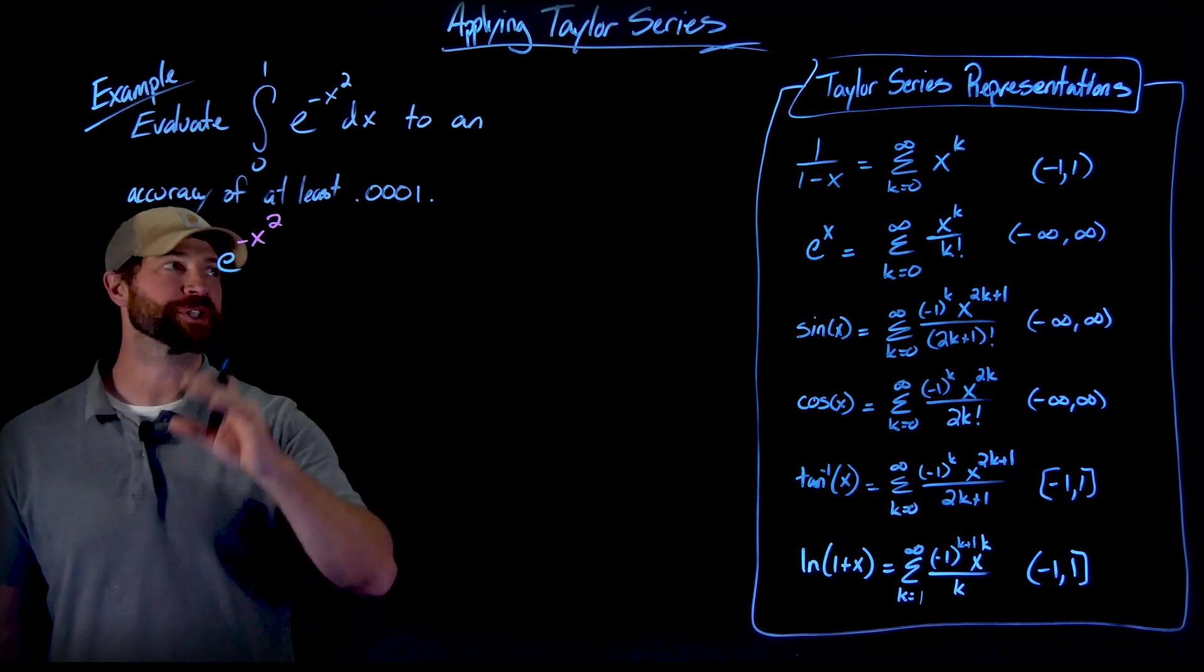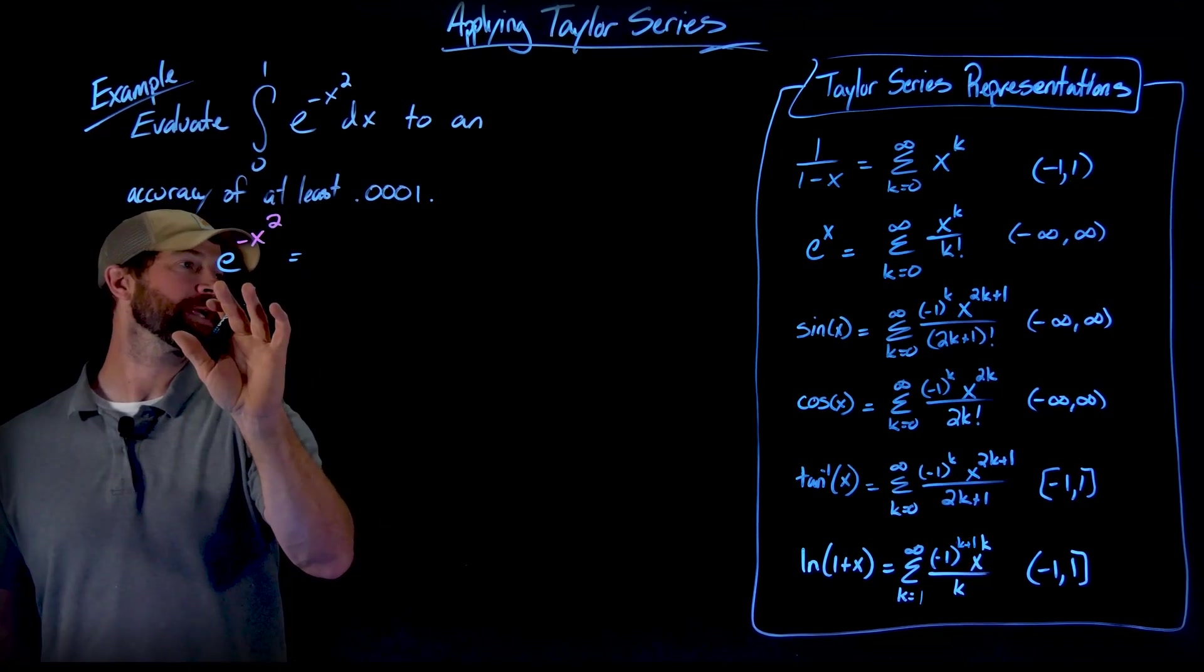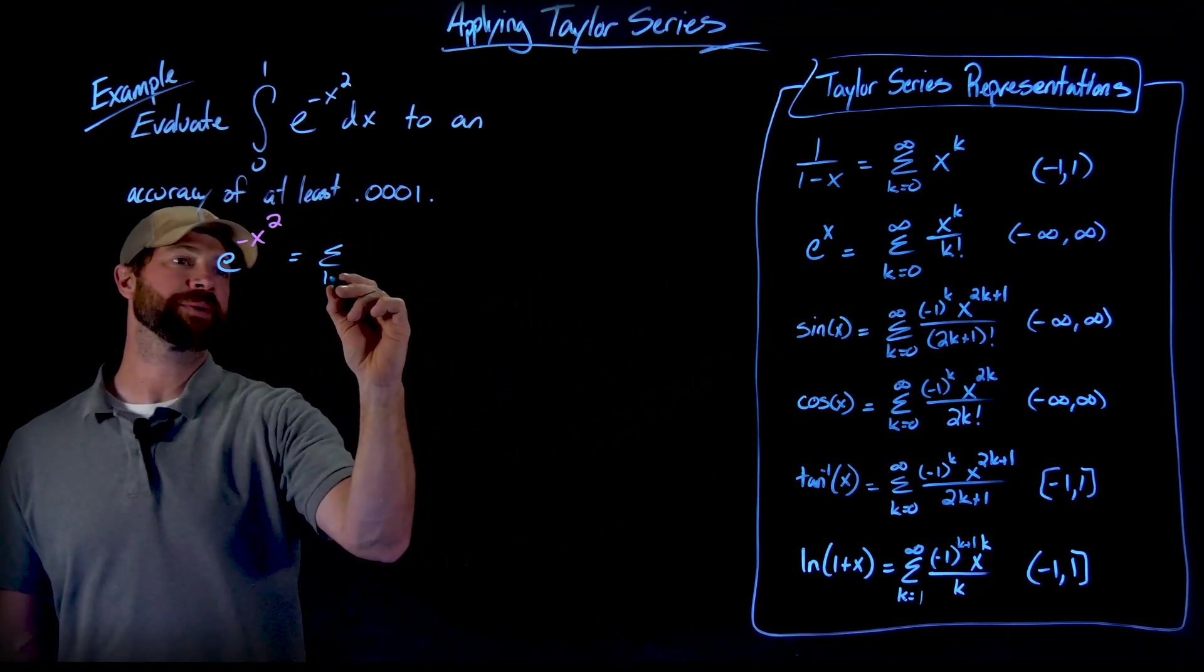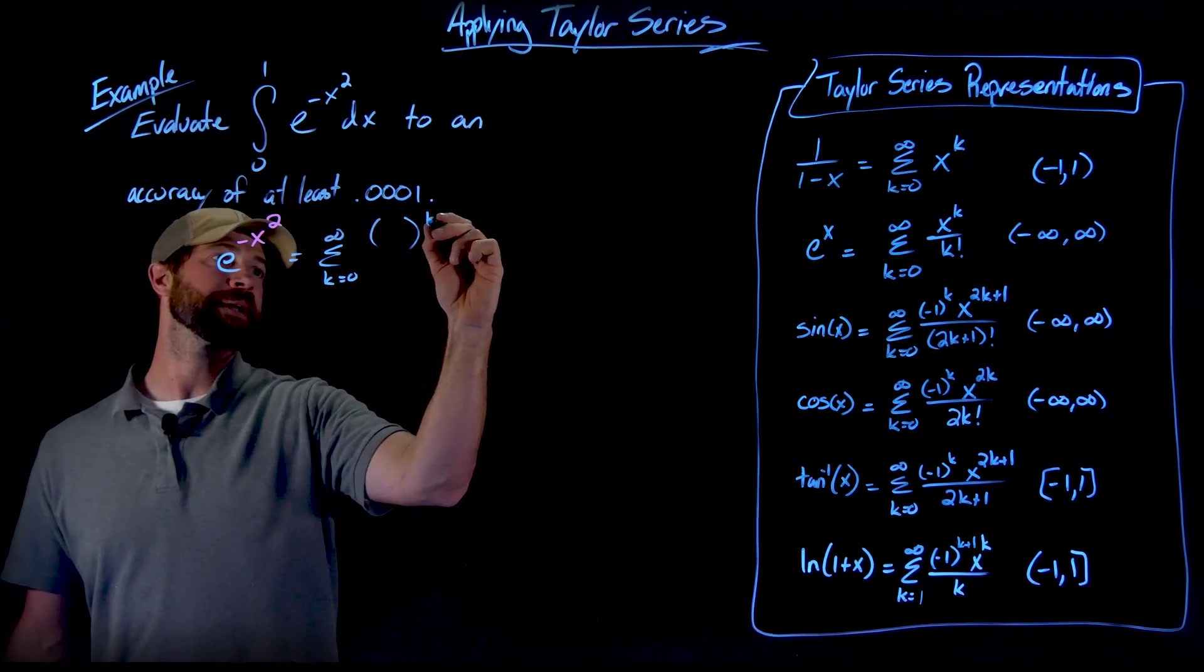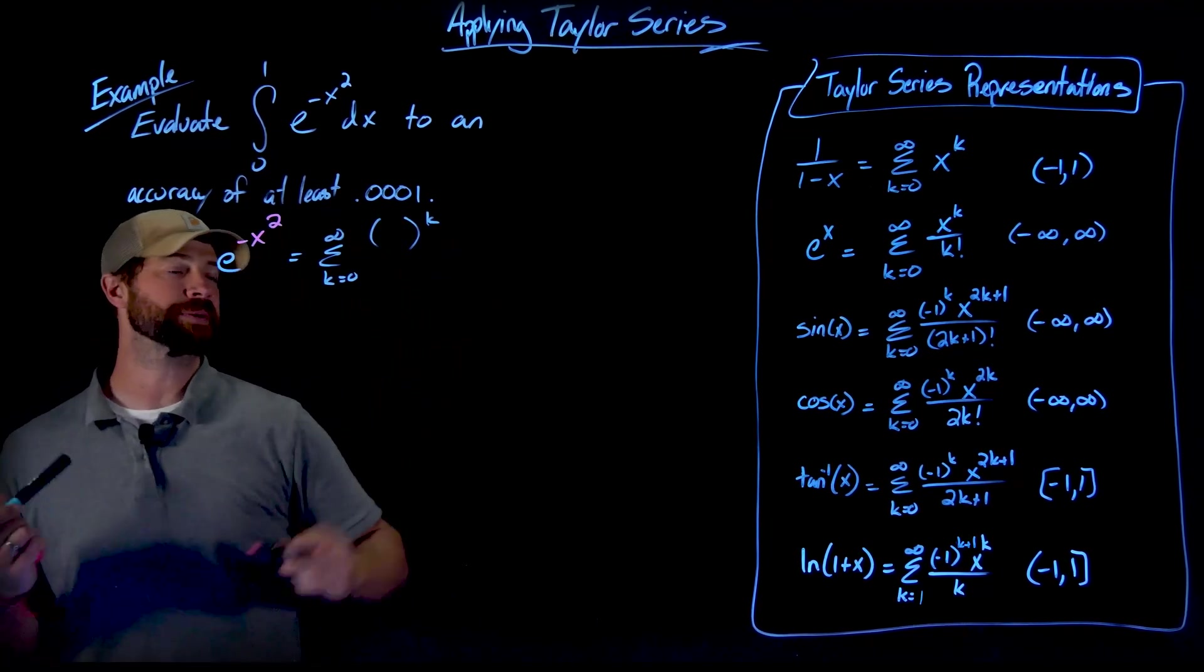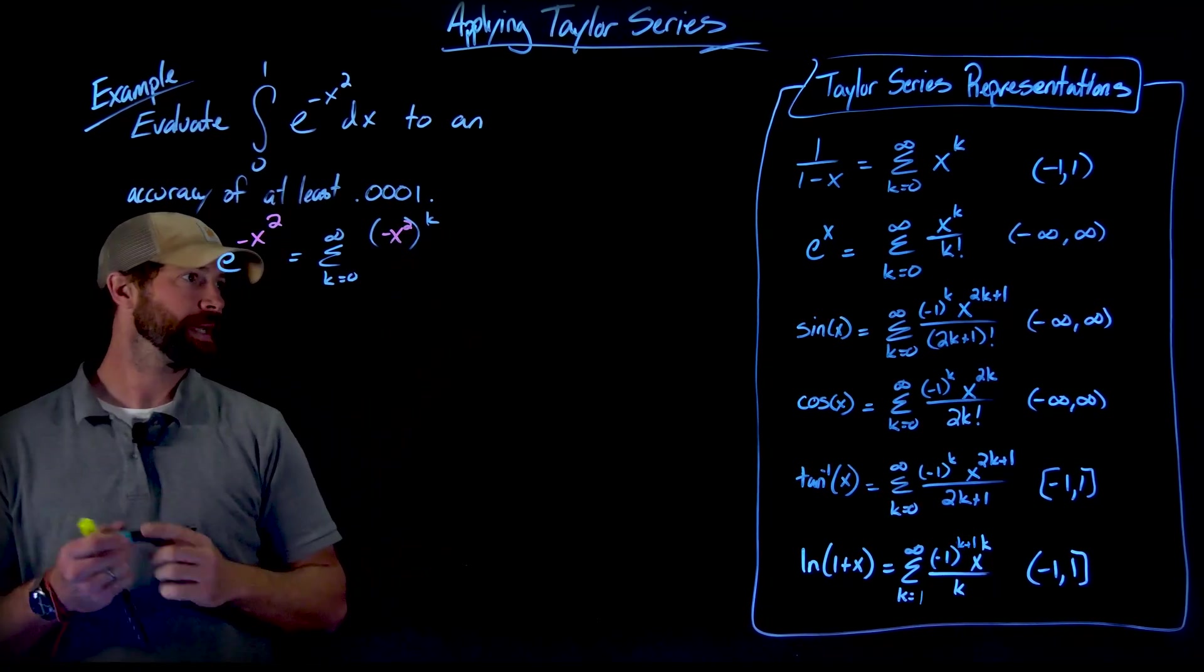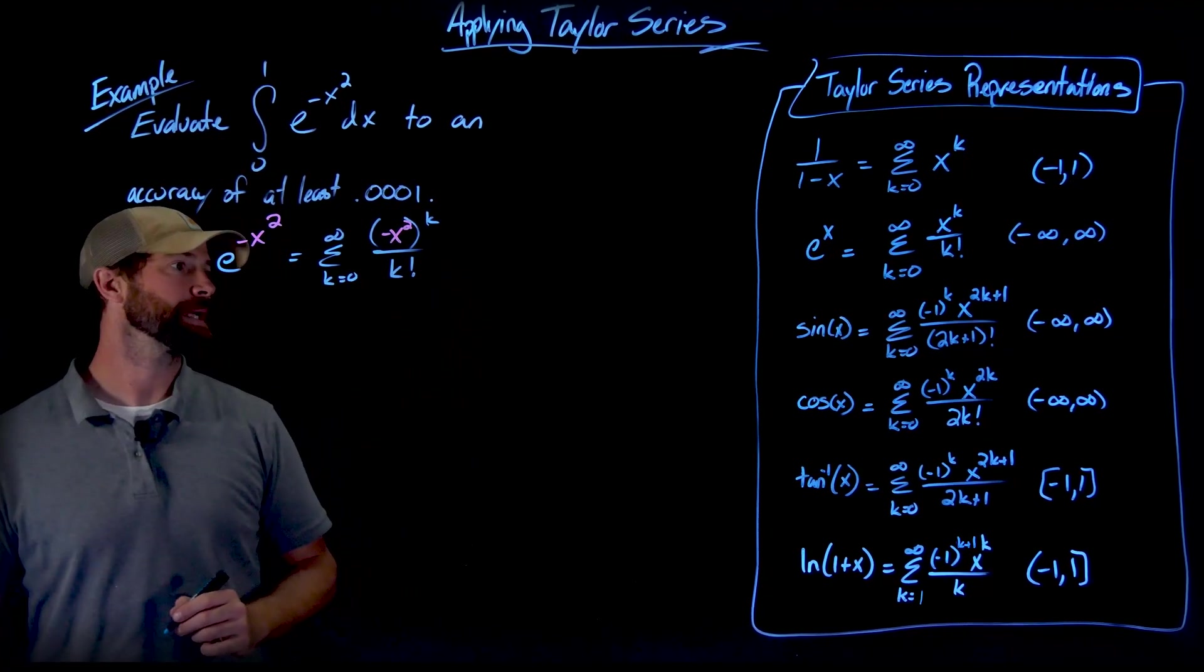So first things first, let's create the Taylor series representation of this function right here. And so it's going to be this e to the x right here. The only difference is going to be we're going to compose it here with the negative x squared. And so I'll just write that in right here. So negative x squared. And we can't forget to evaluate this divided by k factorial.